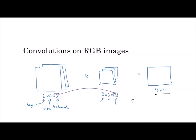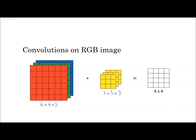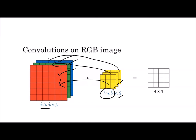The output size is calculated as: input size minus filter size plus 1. With a 6 by 6 input, filter size 3, valid padding, and stride 1: 6 minus 3 plus 1 equals 4, so the output feature map is 4 by 4. The first filter channel applies to the red channel, the second to green, and the third to the blue channel of the input image.